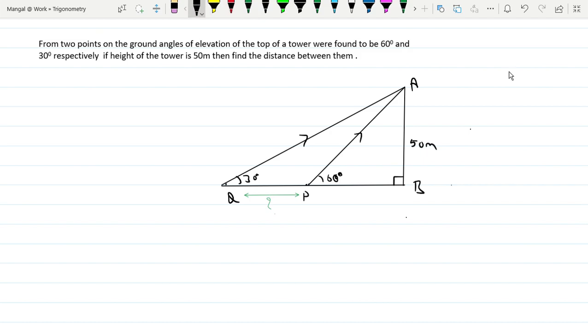This is a right angle triangle APB. PB is the base. So in triangle APB, tan 60 degrees equals perpendicular divided by base, so perpendicular AB over base PB. AB is 50 meters.